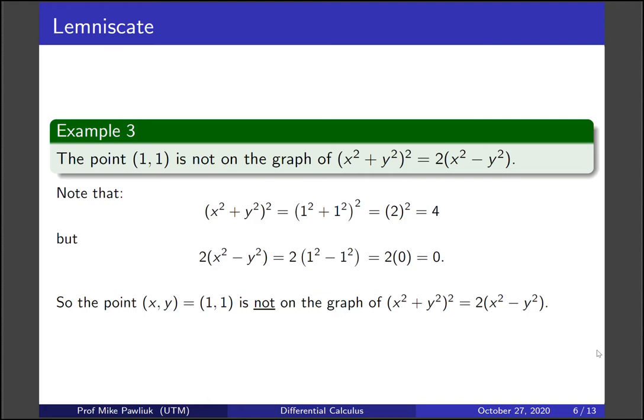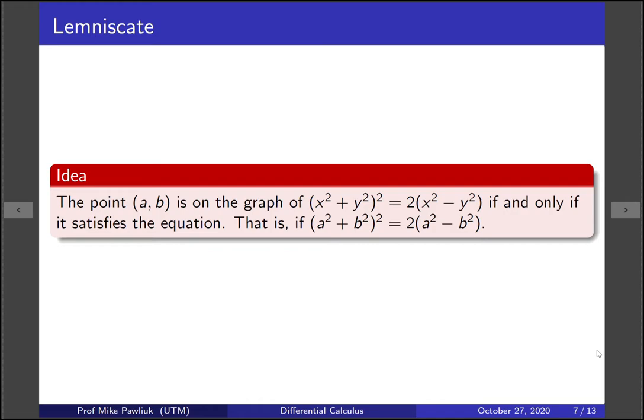So together this tells us what we need to know about when are points on graphs. The idea is that a point (a,b) will be on the graph of the lemniscate if and only if it satisfies the equation. So when you plug in a and b you get equality here.